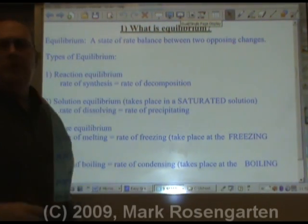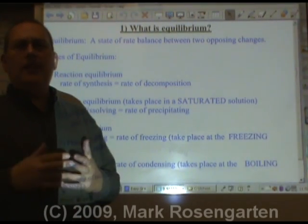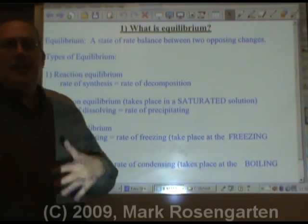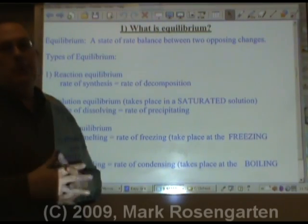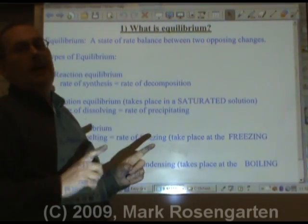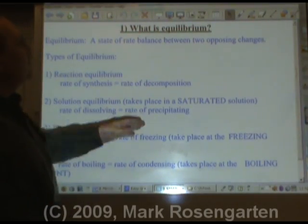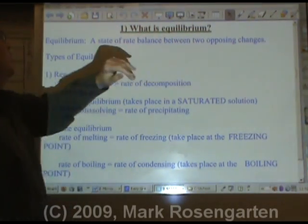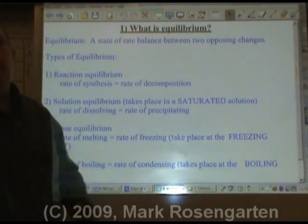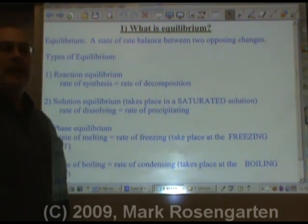Next up, equilibrium. Supposedly, a chemical reaction is going to start and then finish, or it's not going to start — that's the way chemical reactions usually work. But sometimes, under very special circumstances, a reaction can reach equilibrium, which is a state of rate balance between two opposing changes.